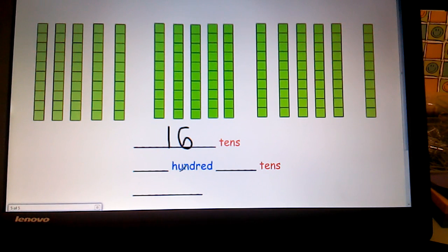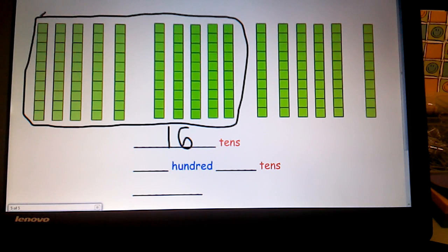Can I make a hundred? I sure can. I see ten longs here that I can group together to make my counting easier. One hundred and I have six tens left over. The three digit number altogether is going to be one hundred and sixty.